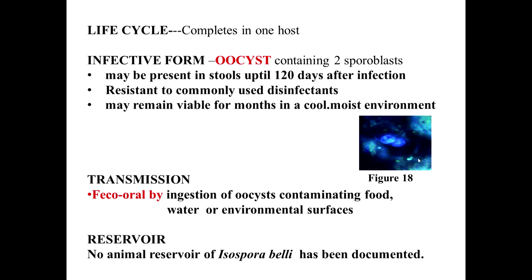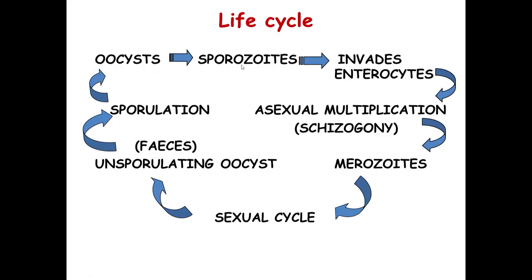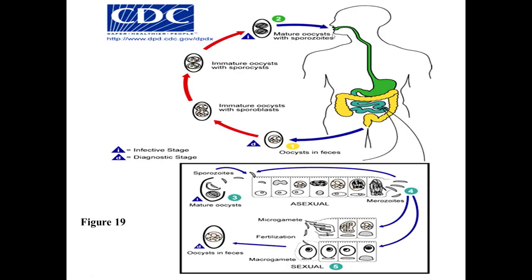Fecal-oral transmission is important — ingestion of oocysts via contaminated food, water, or environmental surfaces. No animal reservoir has been demonstrated. In the life cycle, mature oocysts release sporozoites which invade enterocytes, undergo asexual multiplication forming merozoites, then sexual reproduction forms oocysts. Unsporulated oocysts are excreted, sporulate externally, and become infective. In the intestinal cycle, asexual and sexual life cycles both occur — gametes are formed, leading to oocysts in feces which are released as immature and later become infective.